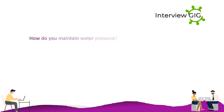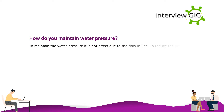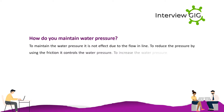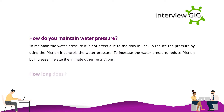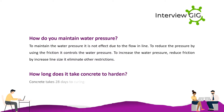How do you maintain water pressure? To maintain water pressure, it should not be affected by the flow in the line. Pressure can be reduced by using friction to control the water pressure. To increase water pressure, reduce friction by increasing line size and eliminate other restrictions.